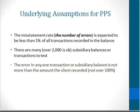The second assumption is that there are many subsidiary balances or many transactions to test. Generally, the statistics work as long as there are 2,000 or more. And finally, there's the underlying assumption that the error in any one transaction or subsidiary balance is not more than 100%. When you think about it, if a client records a balance at $100 and the balance is supposed to be zero, it's 100% overstated. If the percent of error is more than that — more than 100% — PPS sampling cannot accommodate that kind of error in the calculations.